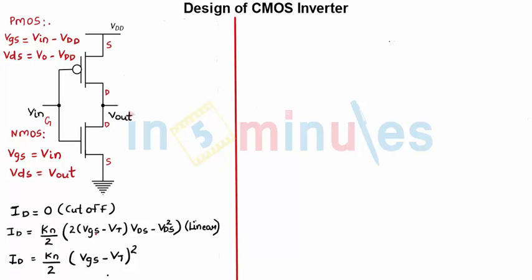We know that CMOS inverter has complementary push-pull operating mode. Push means something which can push my output to zero which is nothing but an NMOS and pull means something which can pull my output to VDD which is nothing but my PMOS.